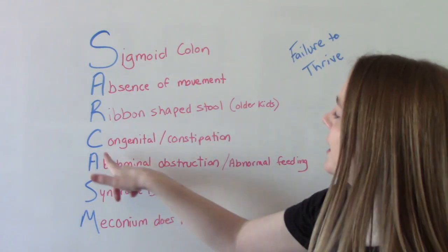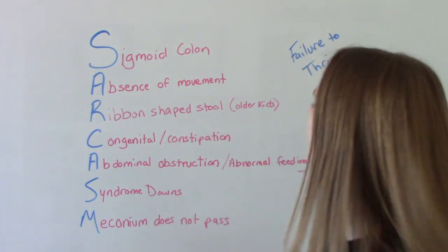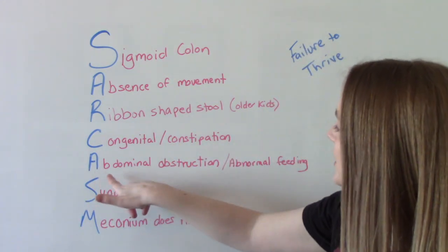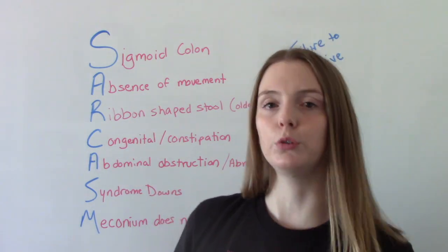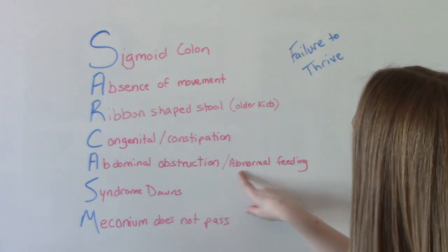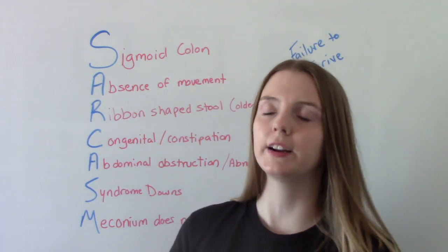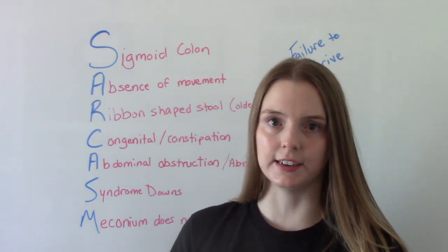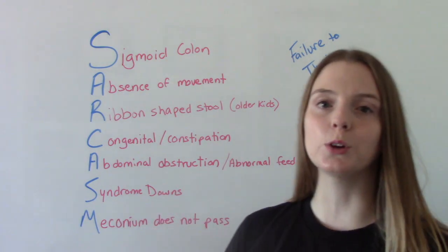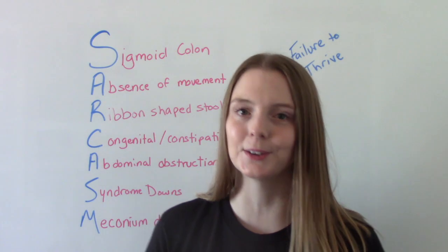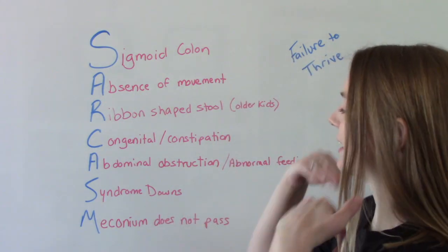C is for congenital, because you're born with it, and of course constipation — that's the big one. A is for abdominal obstruction or abdominal distension, because stool is not moving through the bowel like it's supposed to, and also abnormal feeding — so poor feeding. The newborn can't eat very well and is not interested in eating. S is for syndrome — Down syndrome. Trisomy 21 is a risk factor, and a symptom of aganglionic megacolon is that they don't have a bowel movement within the first 24 hours.